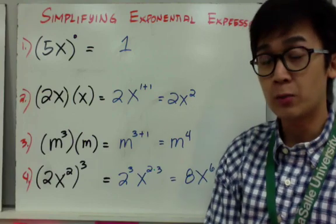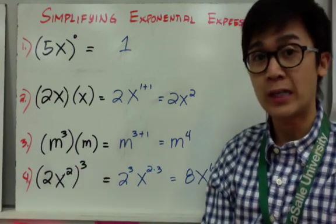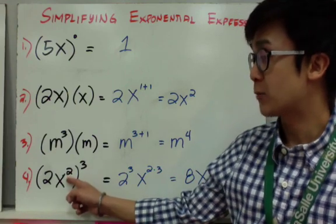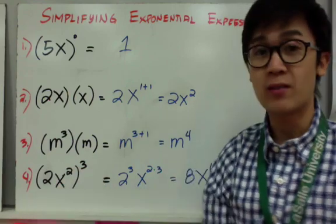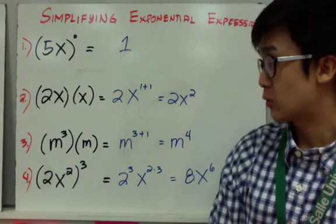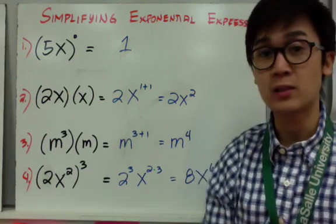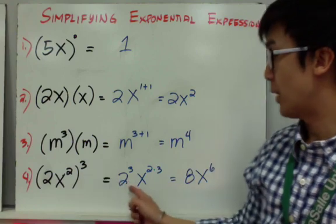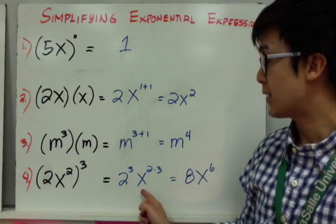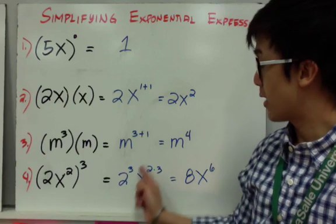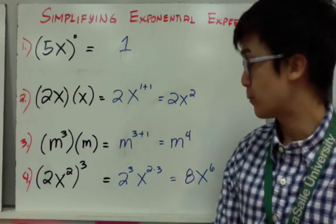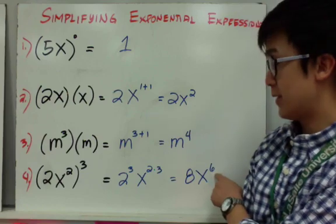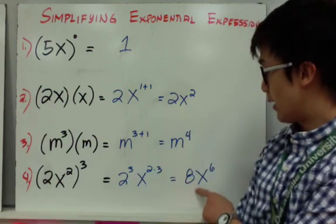Remember: when multiplying the same variables with different exponents, you add them. But when raising an expression to another exponent, you multiply them. For example number 4, we have the quantity 2x squared raised to 3. You distribute 3 to 2 and to x squared, giving 2 cubed times x raised to 2 times 3. Since 2 cubed is 8 and 2 times 3 is 6, the simplest form is 8x to the sixth.